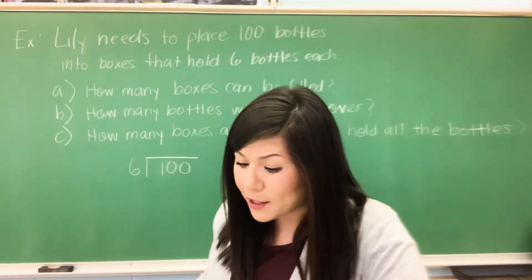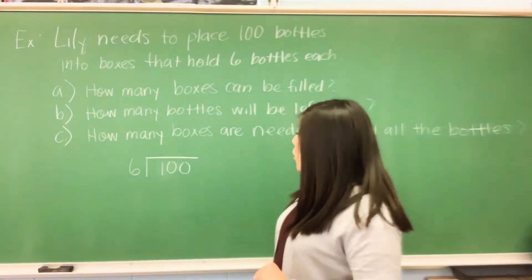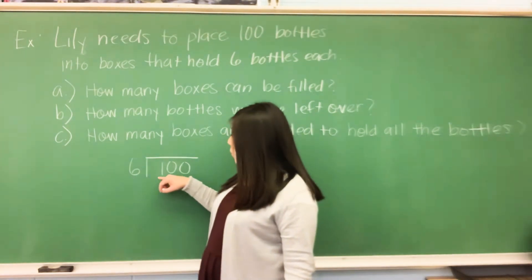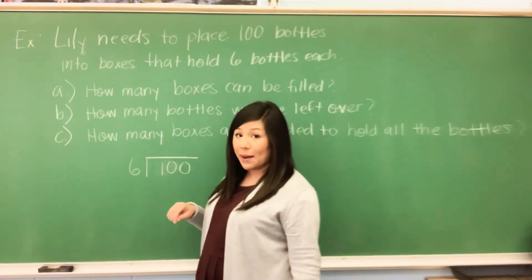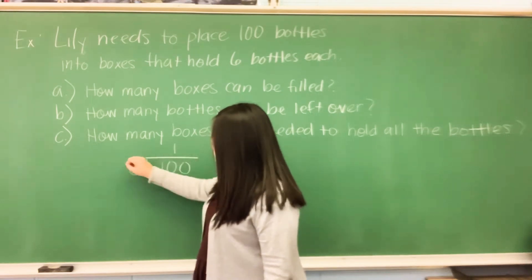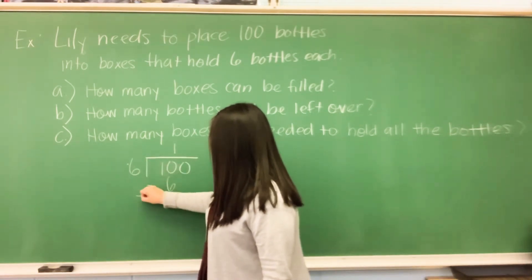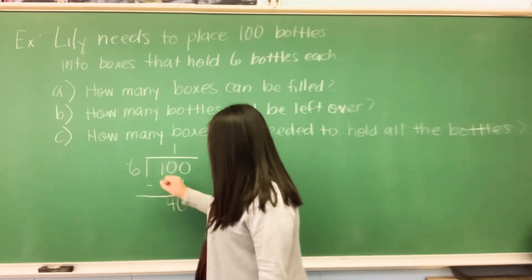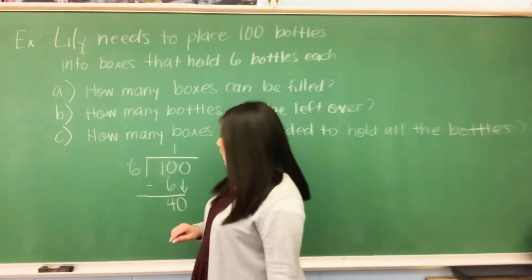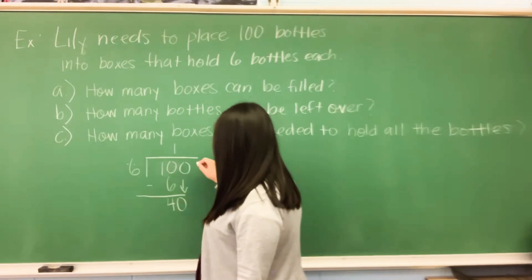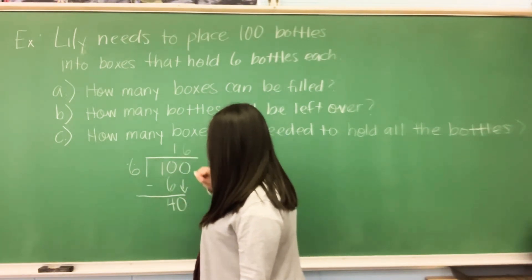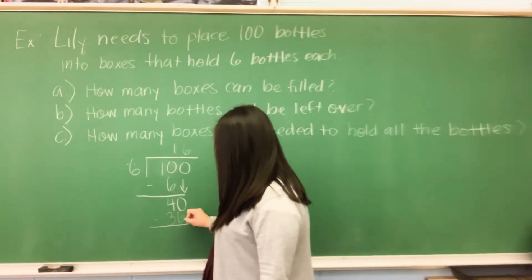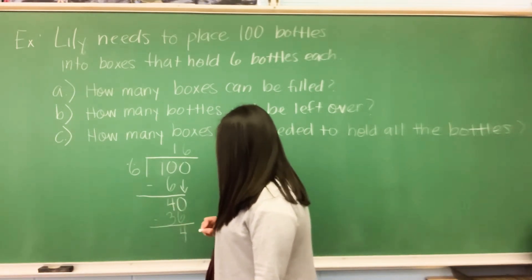So let's divide here: 100 divided by six. One cannot divide into six, so we're going to take 10 divided by six — that's one. One times six is six. Ten minus six is four. Bring down my zero. 40 divided by six is six. Six times six is 36. And that gives us a remainder of four.